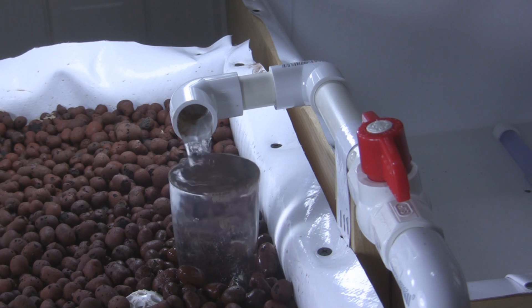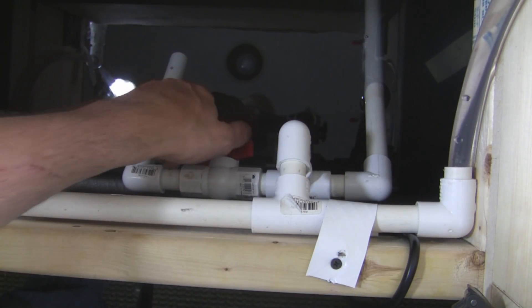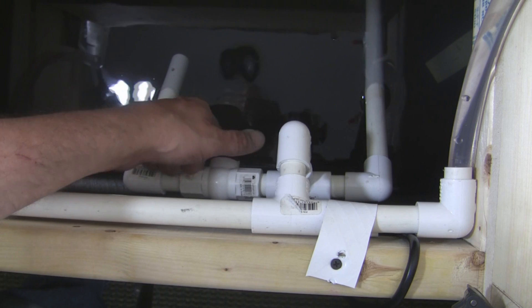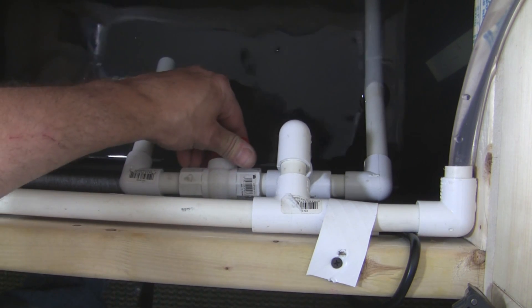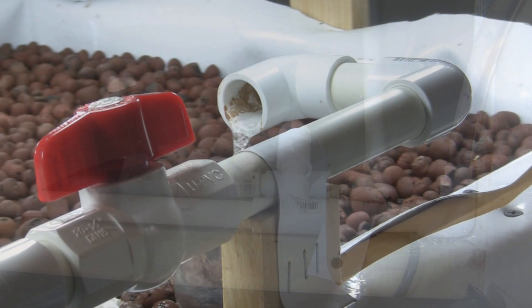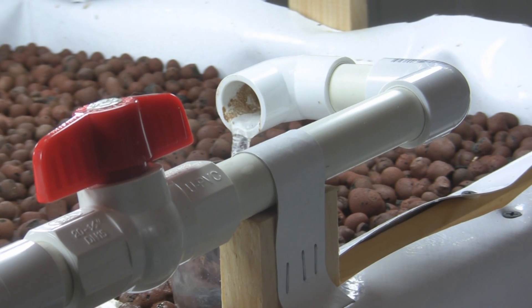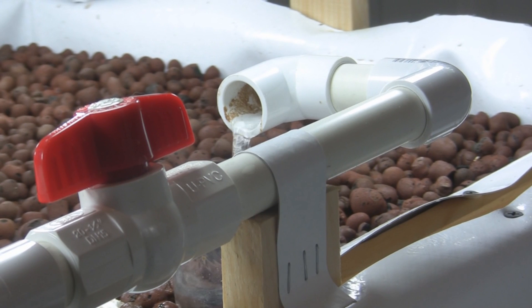So the flow rate can affect whether your siphon starts or stops. So I have a couple of ways to adjust the flow rate. First is the ball valve that controls how much water is returning to the tank, second is the ball valve going to each individual grow bed.